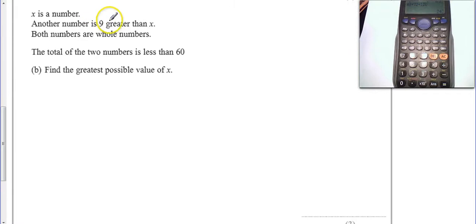Second part. It says x is a number, another number is 9 greater than x. Both numbers are whole numbers, the total of the 2 is less than 60. Find the greatest possible value.